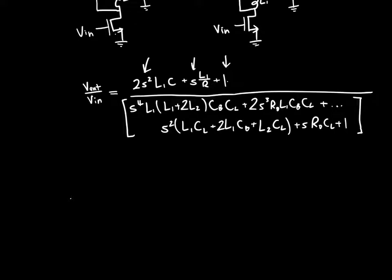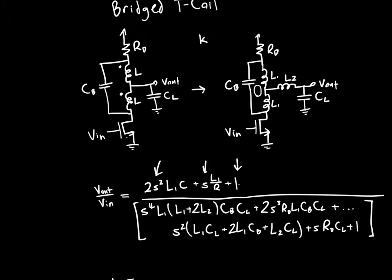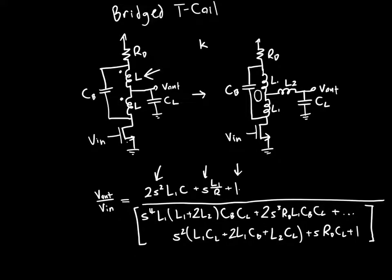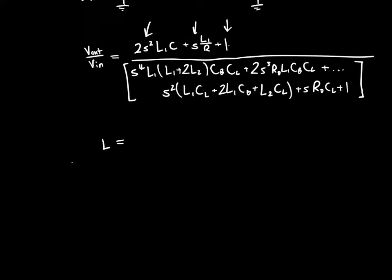If you do either polynomial long division or follow the method provided in the paper that I'll link in the description, you find that the conditions for the poles being canceled is that the inductance value of the original inductors has a value L equal to Rd squared times Cl divided by 2 times (1 minus K). I don't expect you to understand where this came from, but it's basically the result of doing polynomial long division.